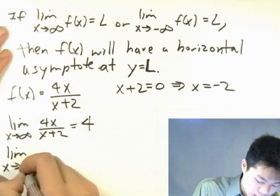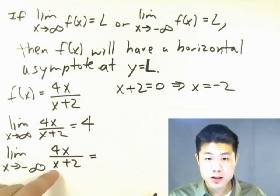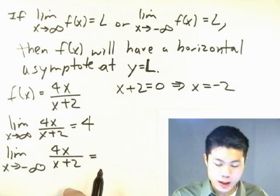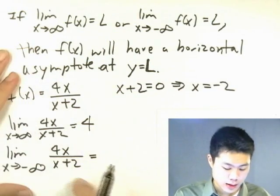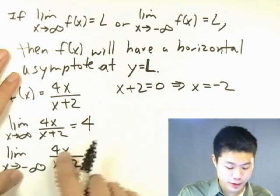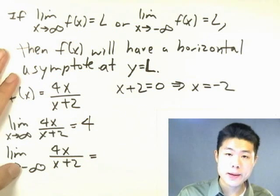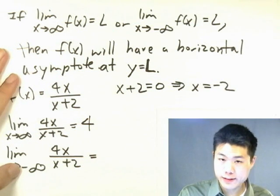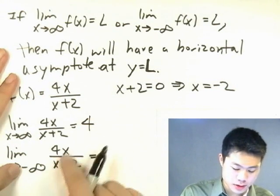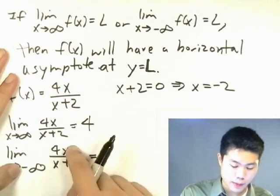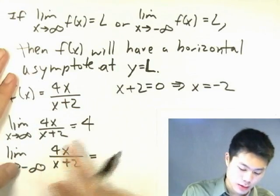Now let's do it as x approaches negative infinity. The leading coefficients are the same. If we plug in, we get negative infinity over negative infinity — both the top and the bottom are negative. Therefore the answer can be positive. Since these are the same degree, the answer is still the ratio of the leading coefficients, and the negative side here doesn't matter. So it's still 4.